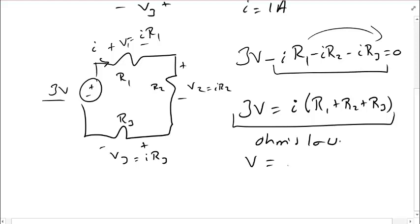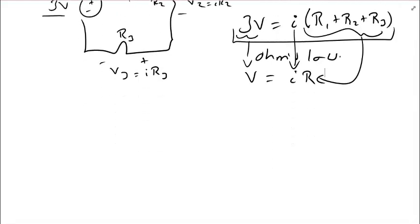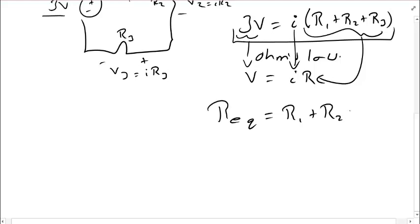Ohm's law says V equals I times R. I have a voltage, in our case it was 3 volts. I have a current, and this is my R. So, I might refer to this, sum of the resistors, as something called REQ. It's a very common way of writing it. This means R equivalent.